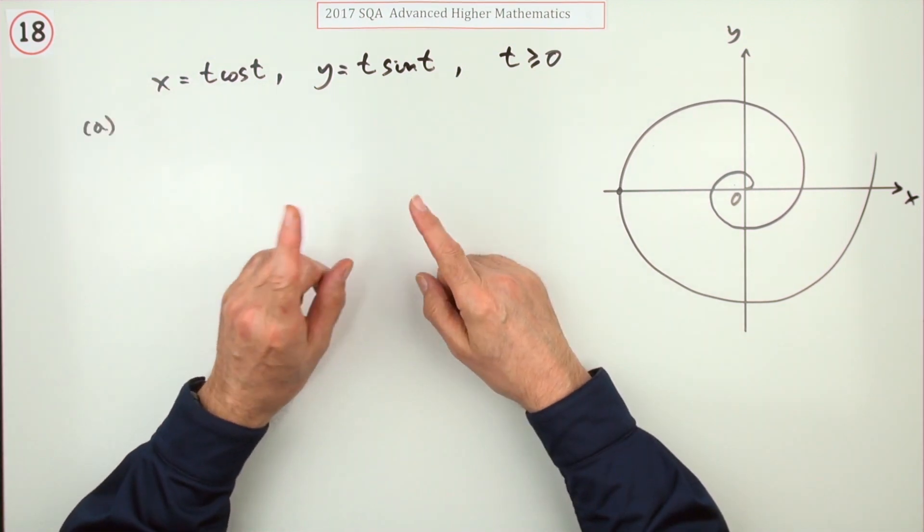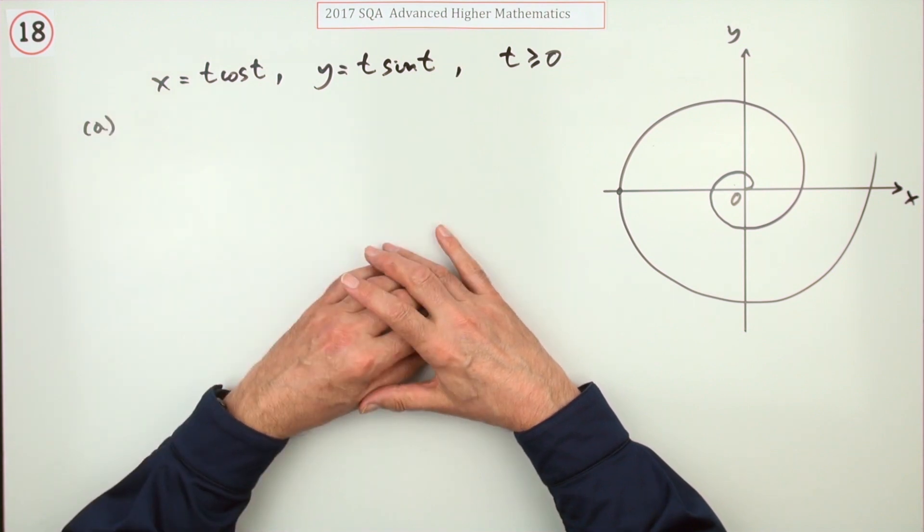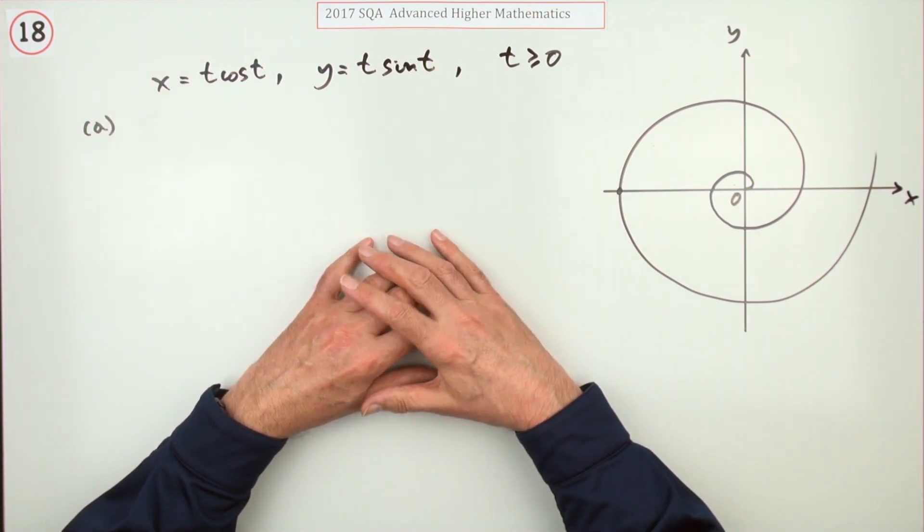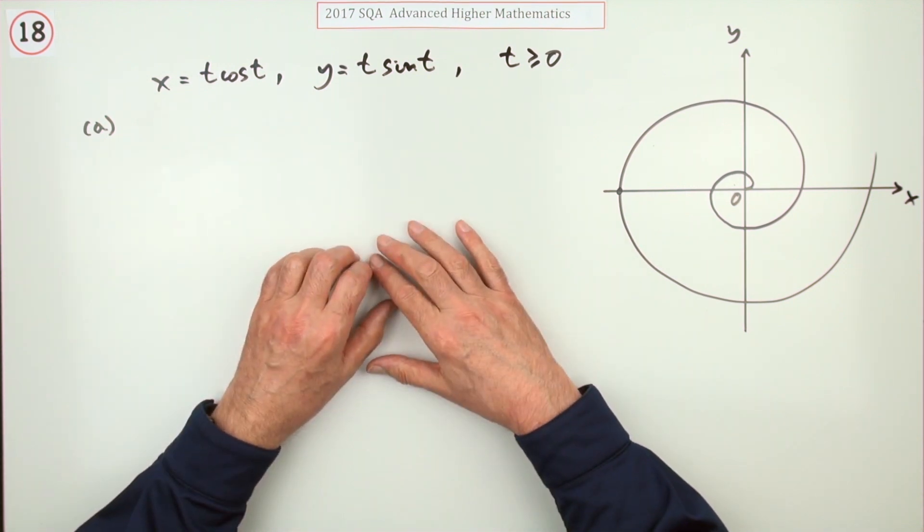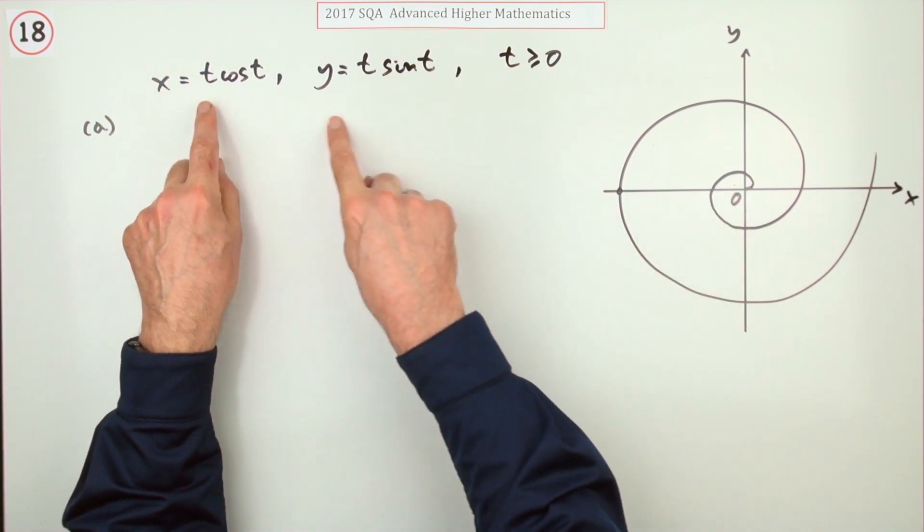Right, number 18, the last question from the 2017 Advanced Higher Maths. No picture for this because no paper, but this one was described to me. There were these two parametric equations and the shape was a spiral, but I knew that anyway from t cos and sine.